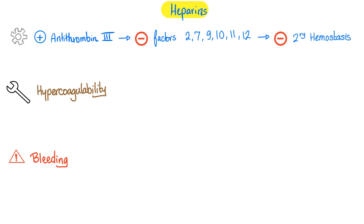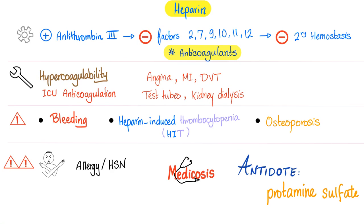If a drug is used to prevent coagulation, what do you think the side effects are? Bleeding — no kidding. Indications: hypercoagulability, ICU, anticoagulation for emergency and urgent situations such as angina, myocardial infarction, and DVT, test tubes, and kidney dialysis. When it comes to the test tube, which color top contained heparin — was it the purple top, the green top, or the blue top? Let me know the answer in the comment section.